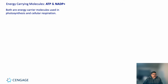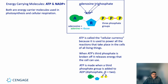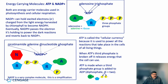The energy-carrying molecules used in photosynthesis are ATP — adenosine triphosphate — and NAD+. ATP is called the cellular currency because it powers all reactions in the cell of all living things. When ATP's third phosphate is broken off, it releases energy the cell can use. ATP is made when a third phosphate group is added to ADP — adenosine diphosphate. The other molecule, nicotinamide adenine dinucleotide phosphate, is very complex — we just call it NAD+.